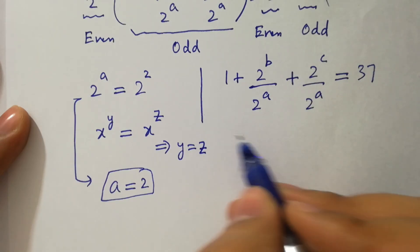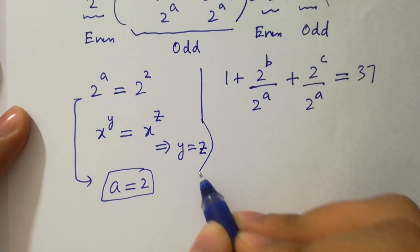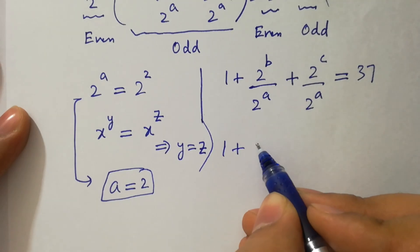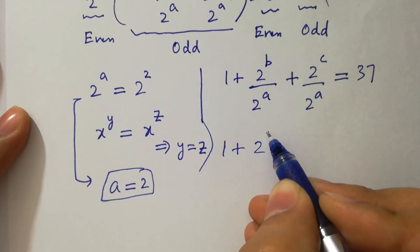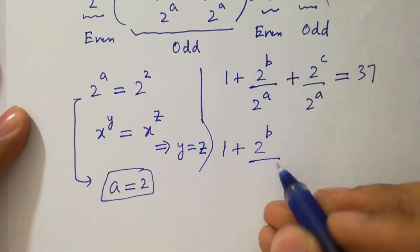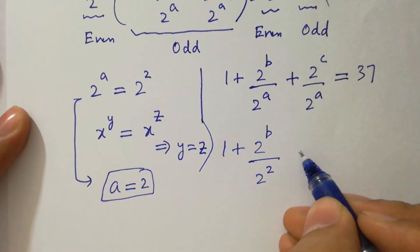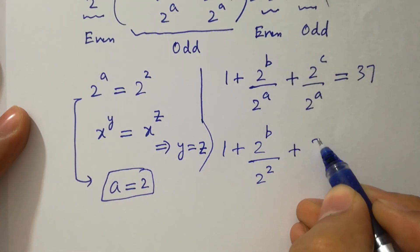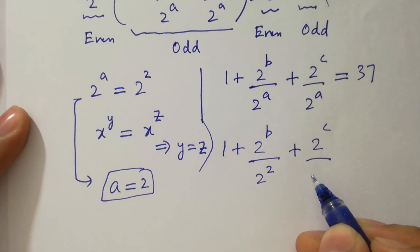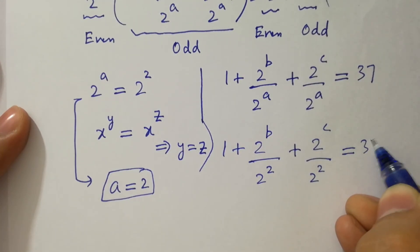Since x to the power y equal to x to the power z, then y equal to z. So the value of a will be equal to 2. Putting this value into the equation, we have 1 plus 2 to the power b over 2 to the power 2 plus 2 to the power c over 2 to the power 2 equals to 37.